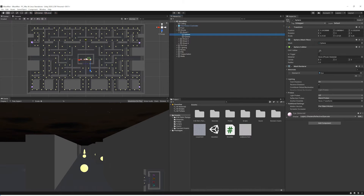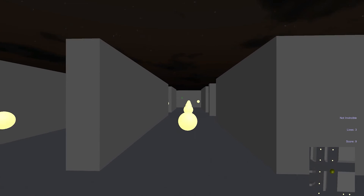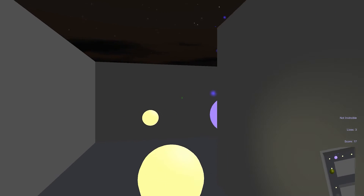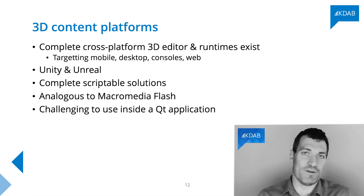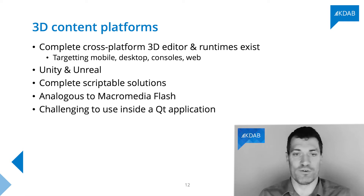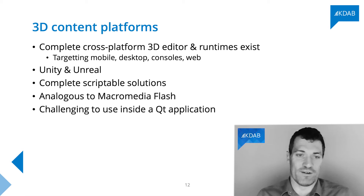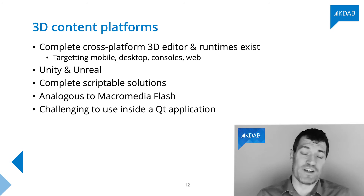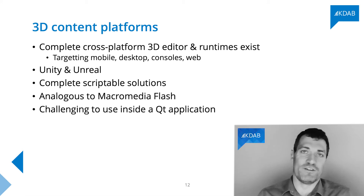With Unity and Unreal, a designer or artist spends hours, weeks, and months working with the authoring tool, then exports a large complex bundle of assets in a proprietary format, which is loaded into a runtime that deploys it across different target platforms. If you want to create a portable game, these are absolutely the way to go. But they're very challenging to use inside a Qt application — they themselves do most of the things that Qt does, including web browsers, script runtimes, property systems, and file loaders, making it very hard to coexist as a library inside Qt.